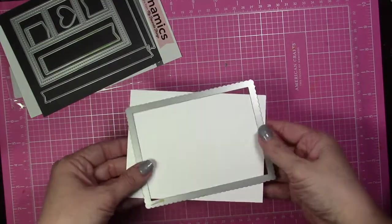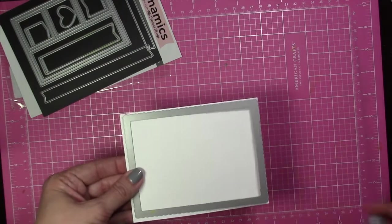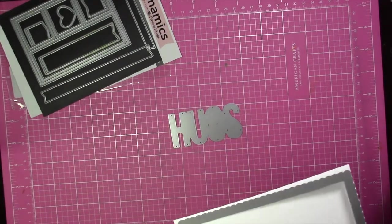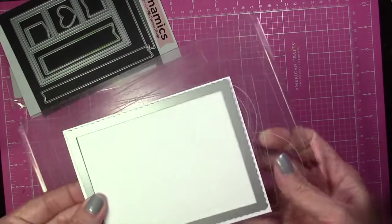Hey everybody, it's Holly here today with a new video for MarkerPop. We're going to be starting out using a piece of Neenah Solar White cardstock and the My Favorite Things Blueprints 27 Dynamics.